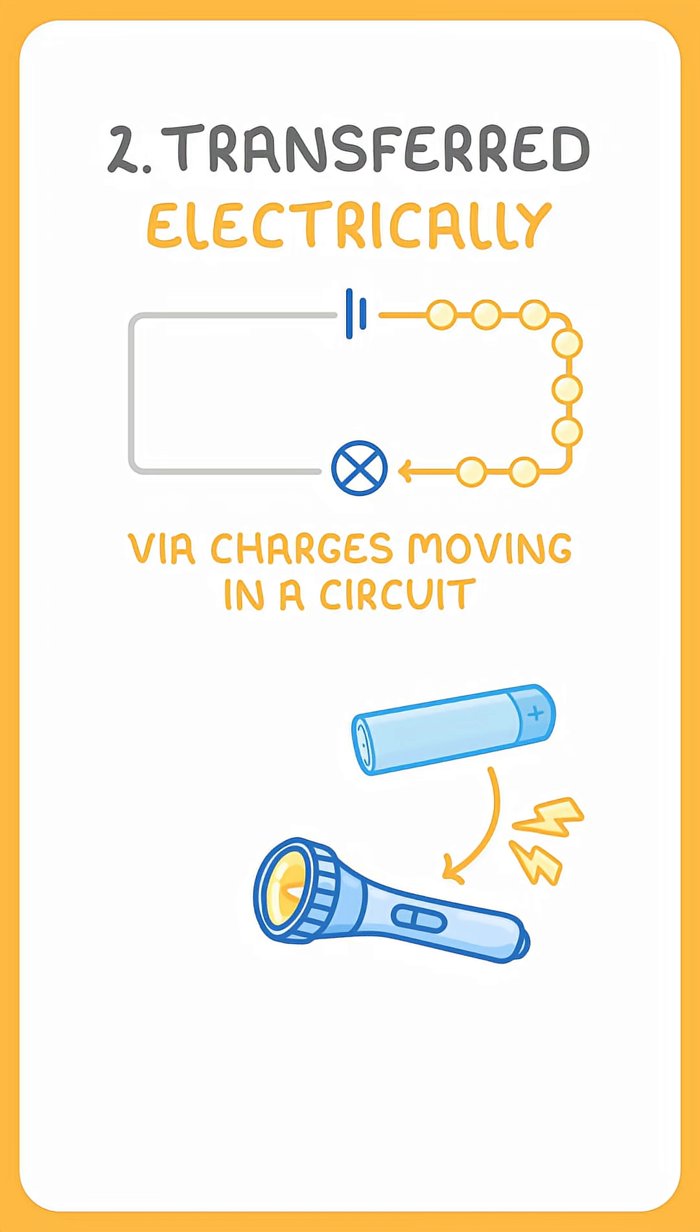Energy gets transferred electrically from the chemical store of the battery to the light and thermal energy stores of the torch.